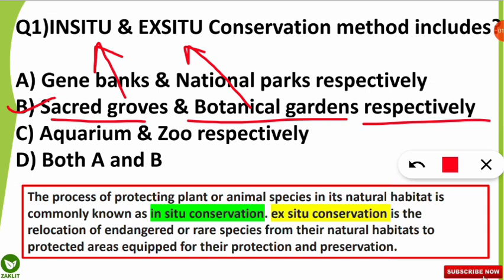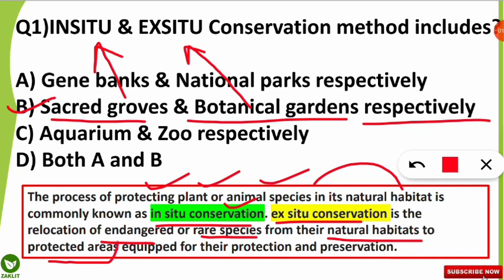You must know in situ and ex situ conservation, but I will repeat it for your convenience. In situ conservation means on-site conservation — protecting any plant or animal species in its natural habitat. Examples include sacred groves and forests. Ex situ conservation means conserving or protecting endangered species or rare species — both plants and animals — by relocating them from their natural habitats to a protected area.